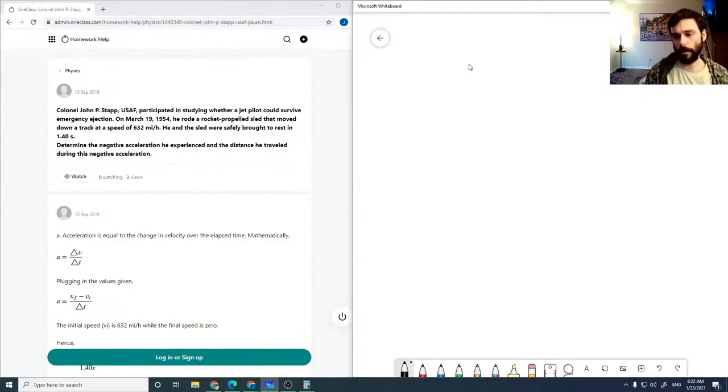We've got Colonel John P. Stapp who studied whether a jet pilot could survive. He rode a rocket-propelled sled that moved down a track at 632 miles per hour and brought it to rest in 1.4 seconds. We need to determine the acceleration he experienced.